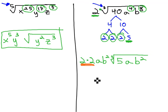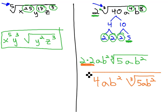Finish up by multiplying the 2's together. 4ab squared times the cube root of 5ab squared for our final solution.